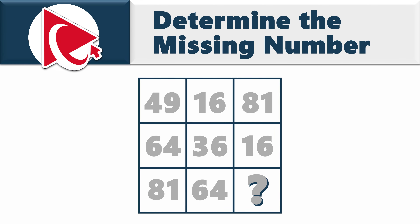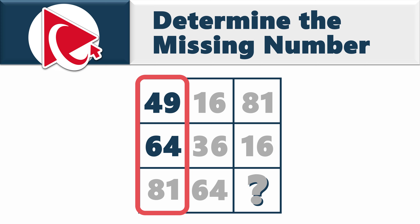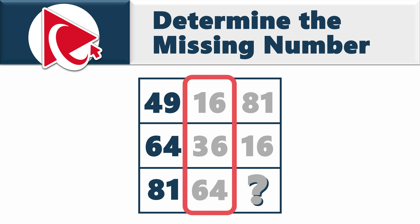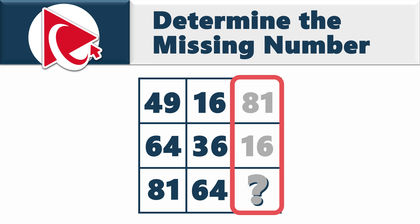Here, you're presented with a 3x3 matrix with numbers inside. Starting from the left column, the numbers are 49, 64, and 81. In the middle column, the numbers are 16, 36, and 64. And in the right column, the numbers are 81, 16, and then comes the missing number, which you need to calculate and select out of 4 possible choices.